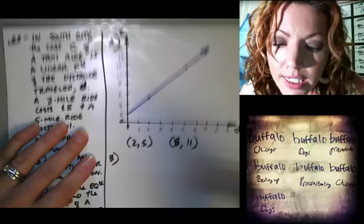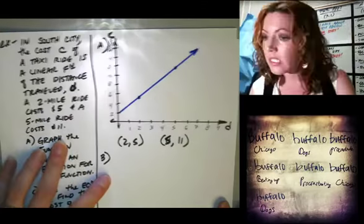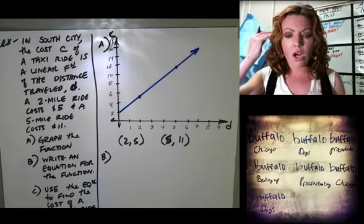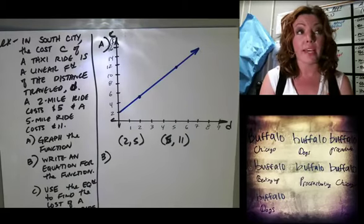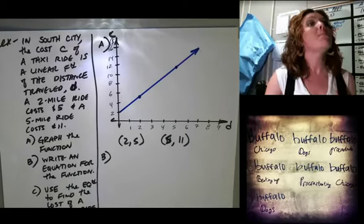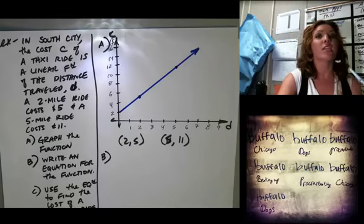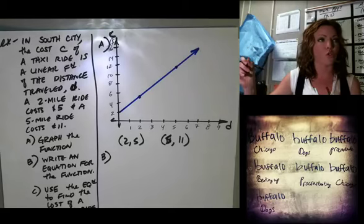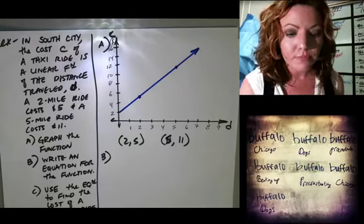Cost in dollars is on the y-axis. It looks like it costs about two dollars to go zero miles — we can verify that from the equation. Sometimes taxis have a flat fee just for taking the taxi, and then beyond that it's a function of how many miles you travel.